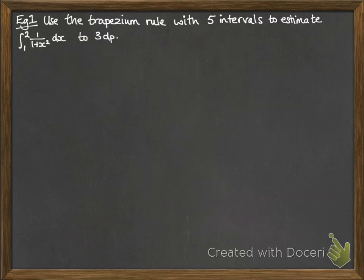Okay, so let's see an example of this. We're going to use the trapezium rule with 5 intervals to estimate that integration to three decimal places. Now we're always told how many intervals to split it up into, and they have to be evenly spaced. So h in this case will be the difference between our boundaries, so 2 minus 1, divided by the number of intervals we have, which is 5, which gives us h is 0.2.